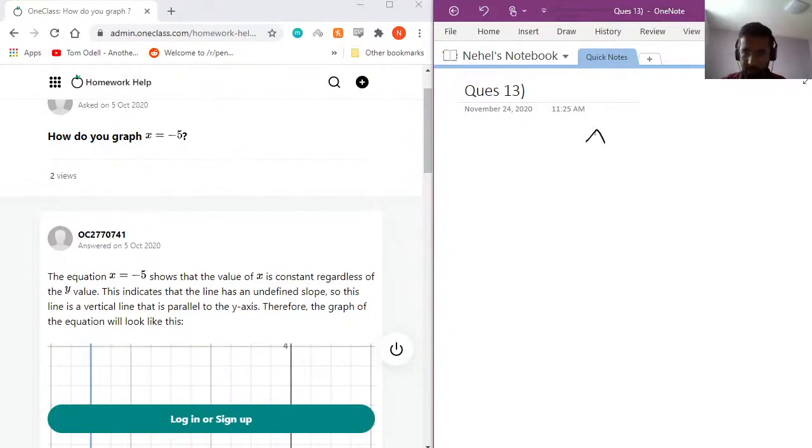So what I mean by that is, if I draw coordinate axes, this is x, this is y, this is the negative x, so I have negative 5 here. How would the value of this line or curve change as y changes?